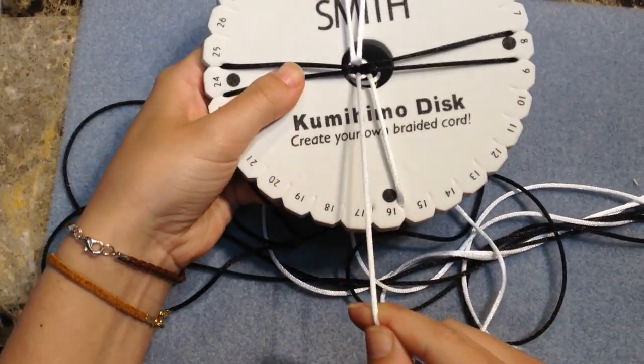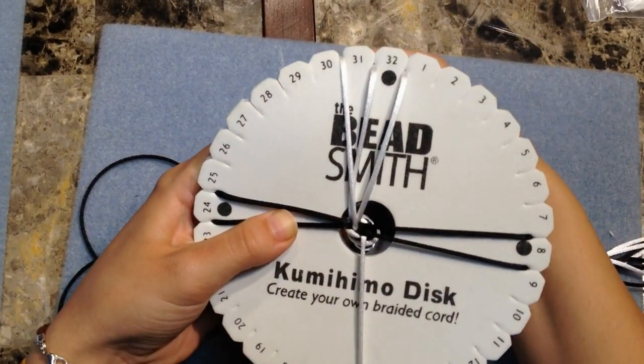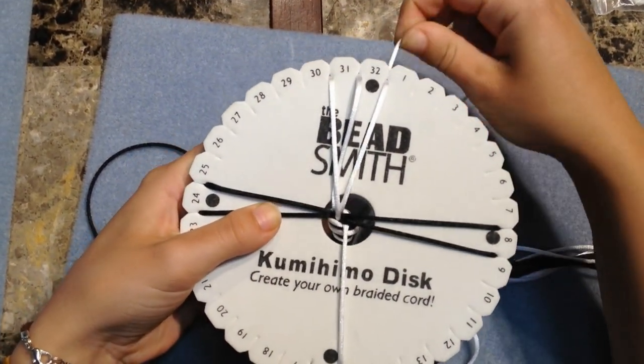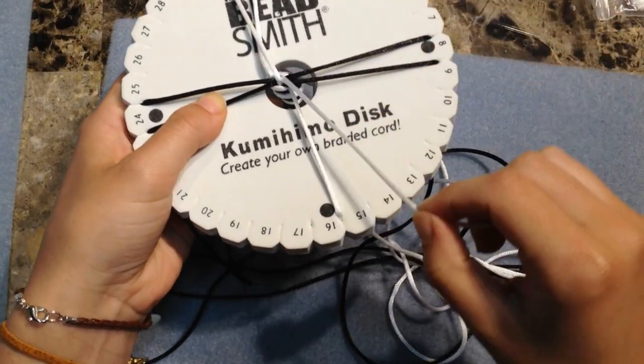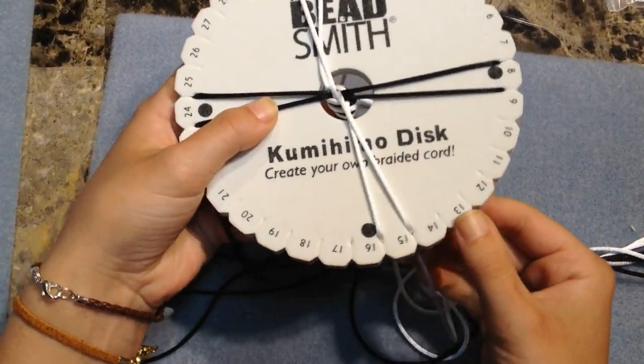You're going to take the bottom left string and take it to the top left. Then take the top right string to the bottom right and then rotate.